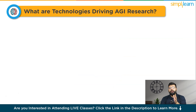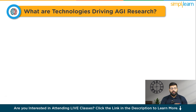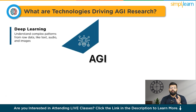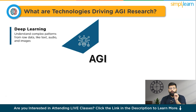AGI research is propelled by several emerging technologies. First is deep learning, which trains neural networks with multiple layers to understand complex relationships from raw data, useful for text, audio, image, and video analysis.